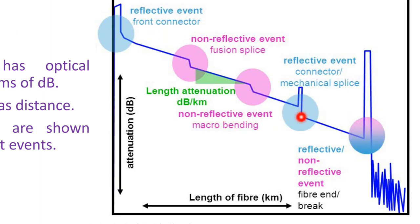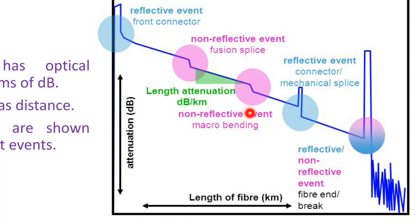Moving further, there is a big abrupt change indicating a reflective event due to a connector or mechanical splice. Then a very big slope change indicates a fiber break. When a fiber break occurs, you cannot have proper data for further distances. This is how we trace data with respect to distance using the reflected signal. In OTDR, we use the reflected signal and based on how much reflection is happening we identify what type of fault is occurring in the optical fiber.